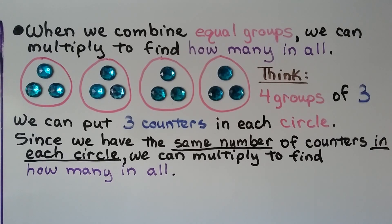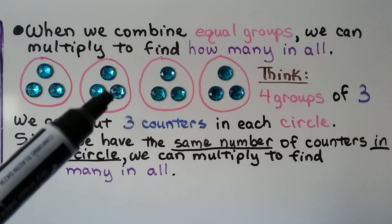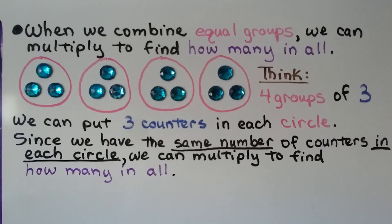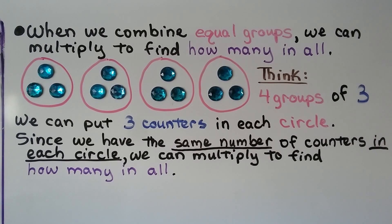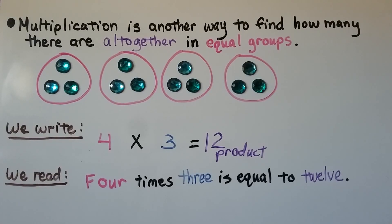When we combine equal groups, we can multiply to find how many in all. We've got four circles, and there's three gems in each circle — four groups of three. We put three counters into each circle, and since we have the same number of counters in each circle, we can multiply to find how many in all.